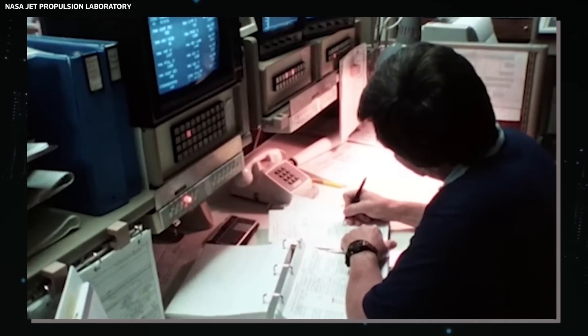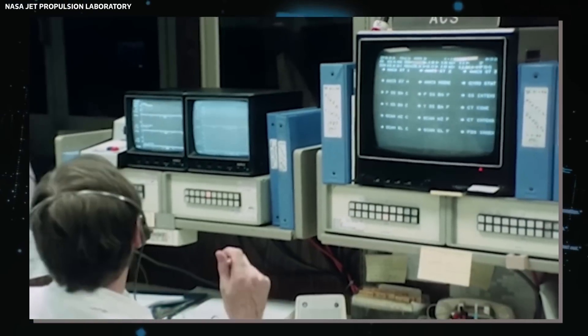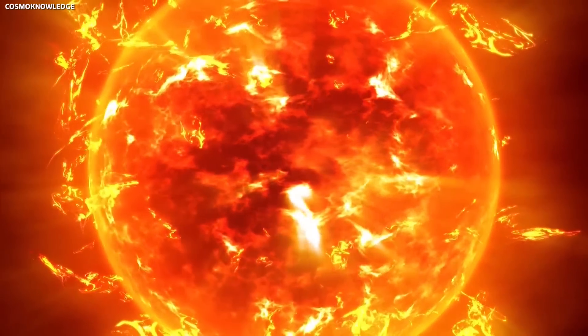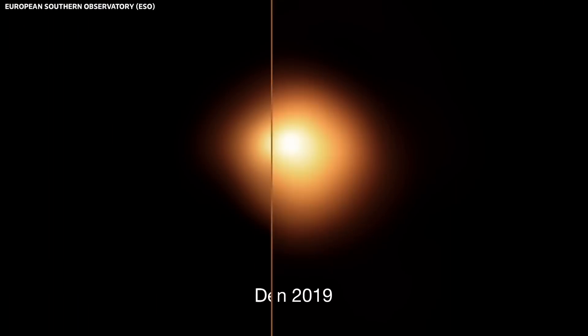NASA astronomers are on the edge of their seats because they've stumbled upon a revelation that has sent ripples through the scientific community. Betelgeuse, known for its consistent brightness, began to dim. This wasn't a gradual dimming that one might expect from a star nearing the end of its life.